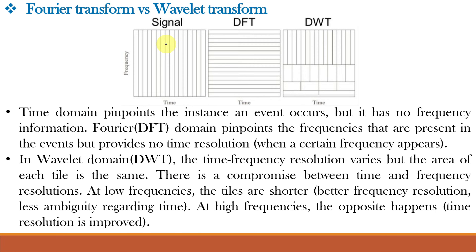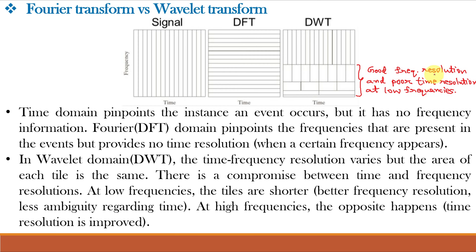For example, consider a signal on the time-frequency axes. The time domain pinpoints the instance an event occurs, but has no frequency information. If we take the Discrete Fourier Transform, it pinpoints the frequencies present but does not provide any time resolution. If we take the Discrete Wavelet Transform, we obtain both time resolution and frequency resolution, though with a compromise: the time-frequency resolution varies but the area of each tile is the same. At low frequencies, tiles are shorter giving better frequency resolution but poor time resolution. At high frequencies, frequency resolution is poor but time resolution is improved.